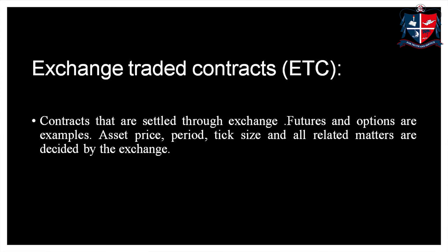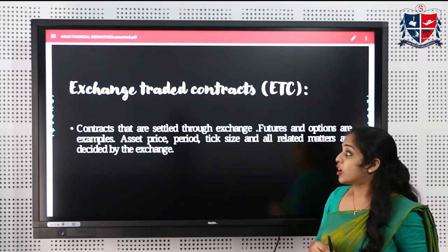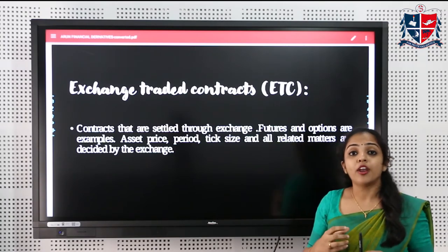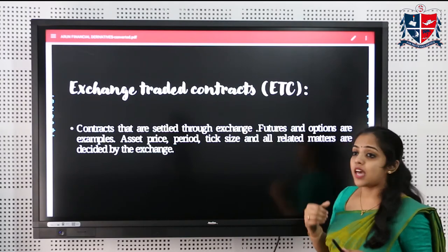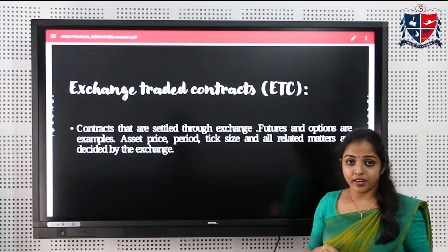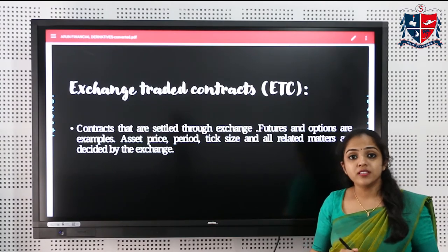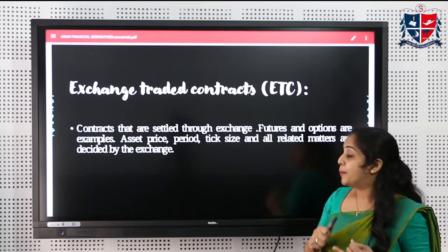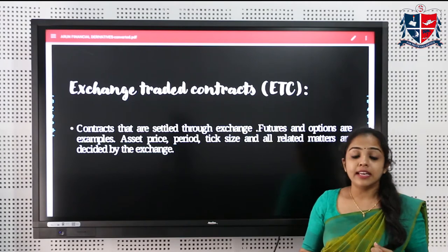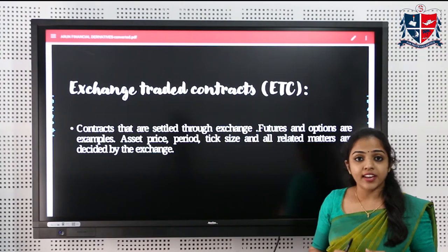Exchange-traded contracts (ETC) are settled through an organized stock exchange. Examples include futures and options. For ETC contracts, the asset prices, period, tick sizes, and all other related matters are settled by a recognized stock exchange.